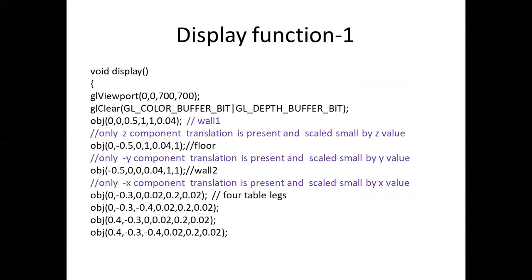In the display function, the viewport has a value of (0,0), 700 and 700 — the origin is (0,0) and the size is 700×700. In glClear we are clearing the color buffer bit and the depth buffer bit. After doing this, we call the OBJ function.